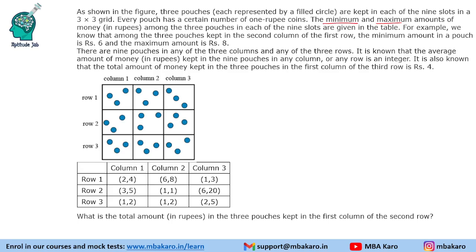So minimum and maximum are given. For example, column 1 row 1 is 2 comma 4, so minimum is 2, maximum is 4. The third value can be anything — it can be 2, 3, or 4. Similarly, if it is 2 and 5, the third value can be 2, 3, 4, or 5.